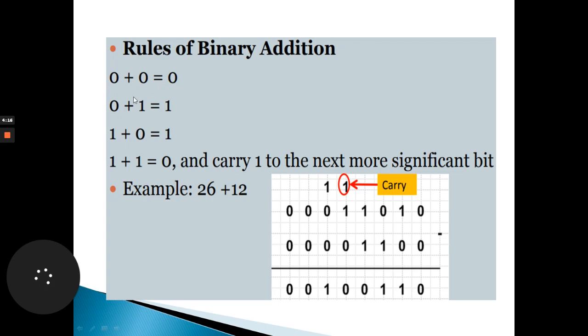0 plus 0 gives us 0. 0 plus 1 gives us 1, as in normal addition. 1 plus 0 equals 1. And 1 plus 1, which is very important in binary addition, equals 0 and there will be a carry generated to the next more significant bit.